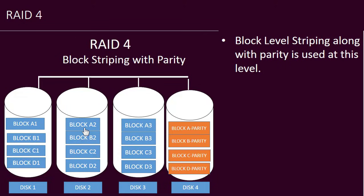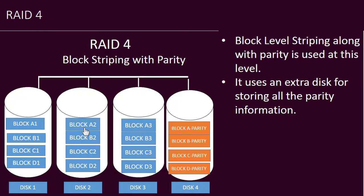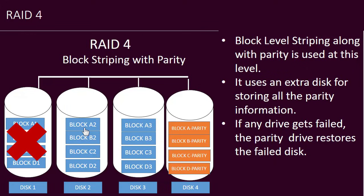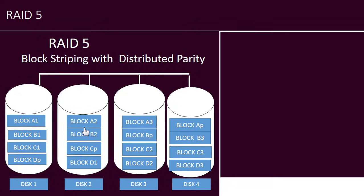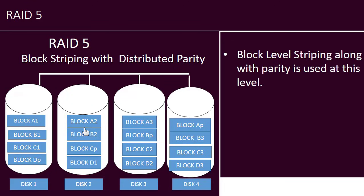RAID Level 4 uses block-level striping with parity. Again, one entire disk is kept for storing the parity information. If one drive fails, the parity drive helps to restore the failed disk. However, if the parity drive fails, recovery of the disk is not possible.